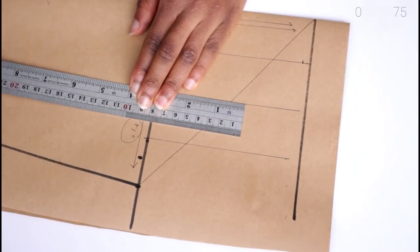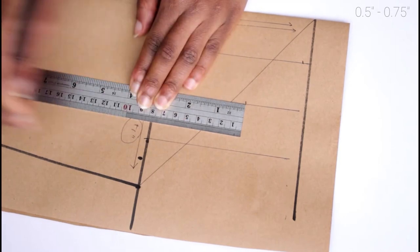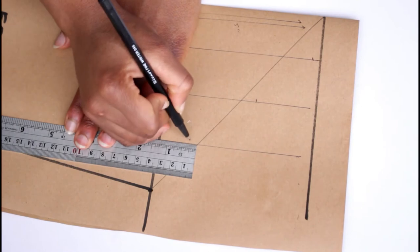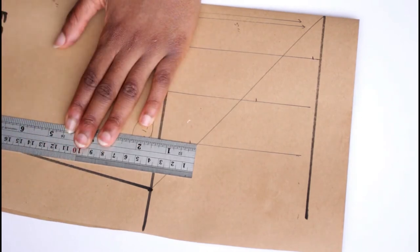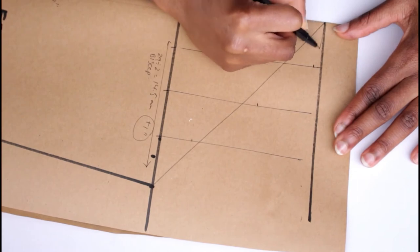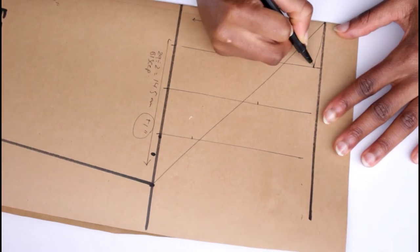Line up your ruler to the diagonal you drew previously and add about an inch to it. Then move it to the middle line and add about three quarters of an inch, which is about 1.5 centimeters. Then move it to the final line and this time you're going to dip it in. I'm going to dip it in about a quarter of an inch, which is about 0.7 centimeters.